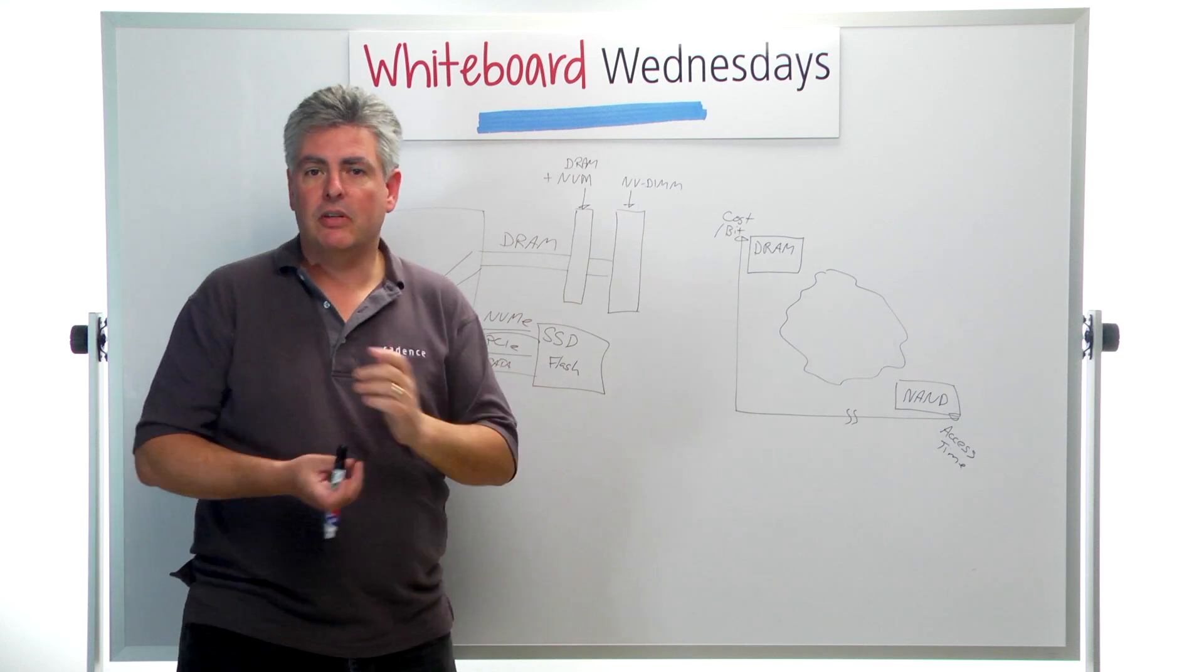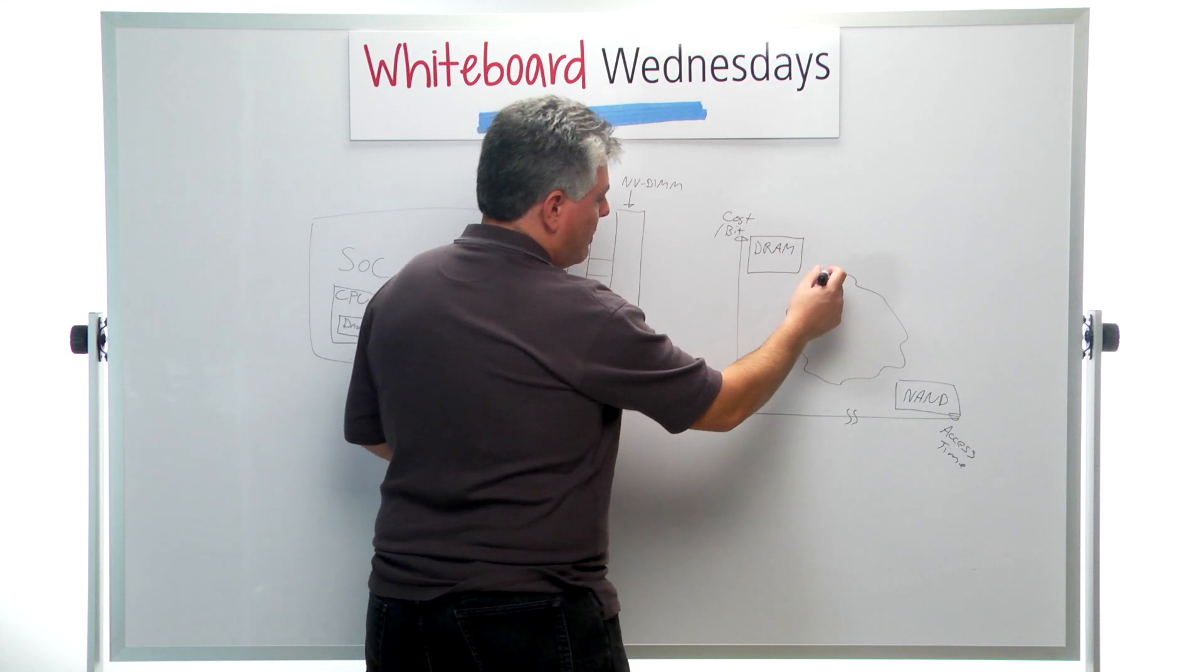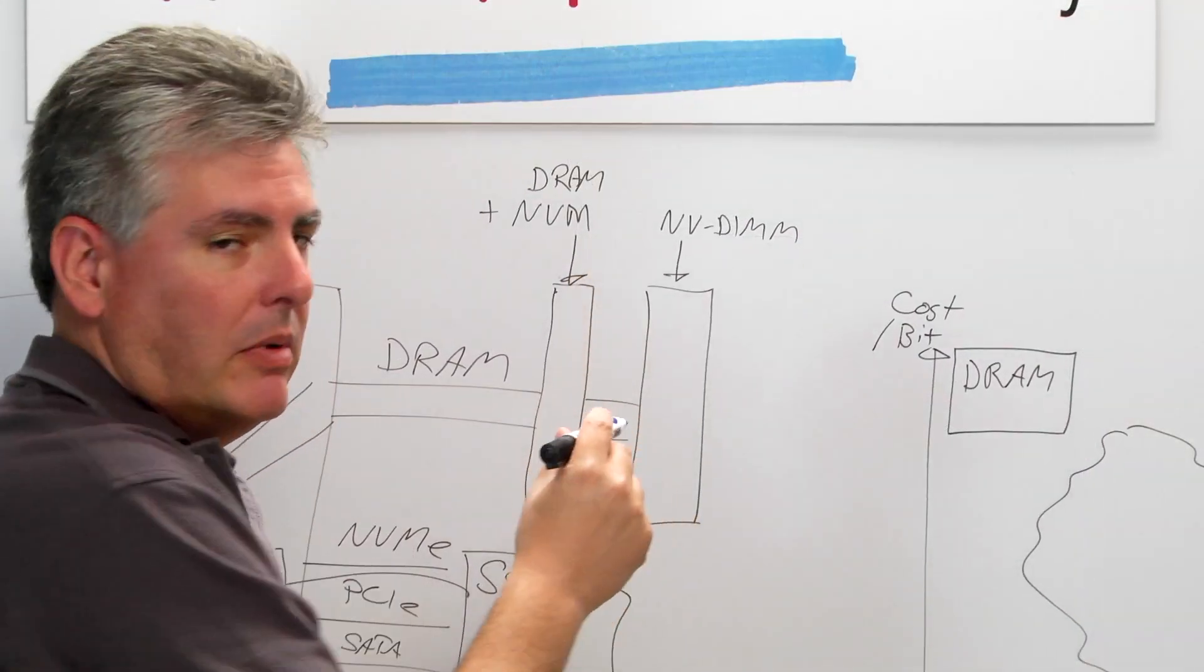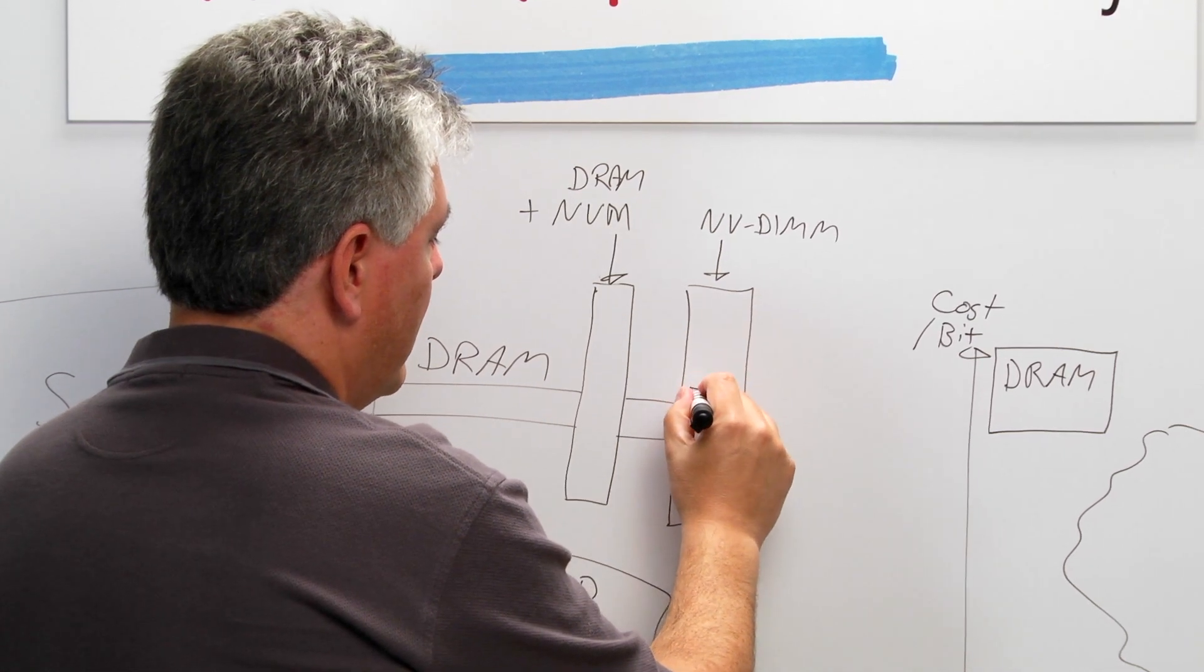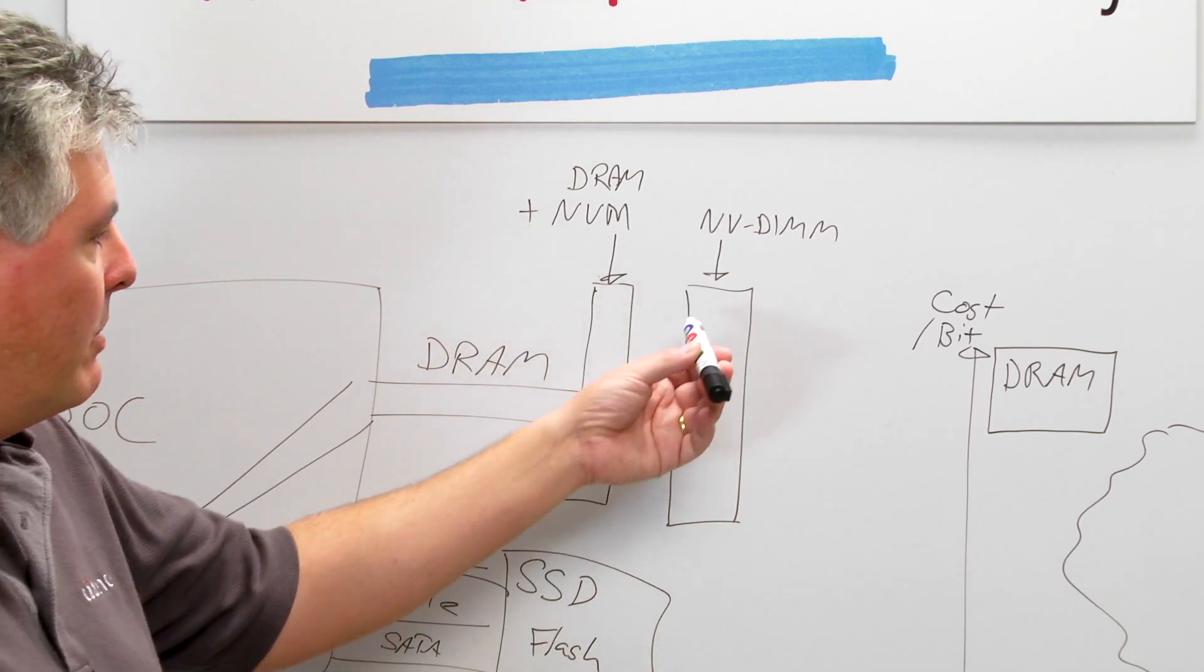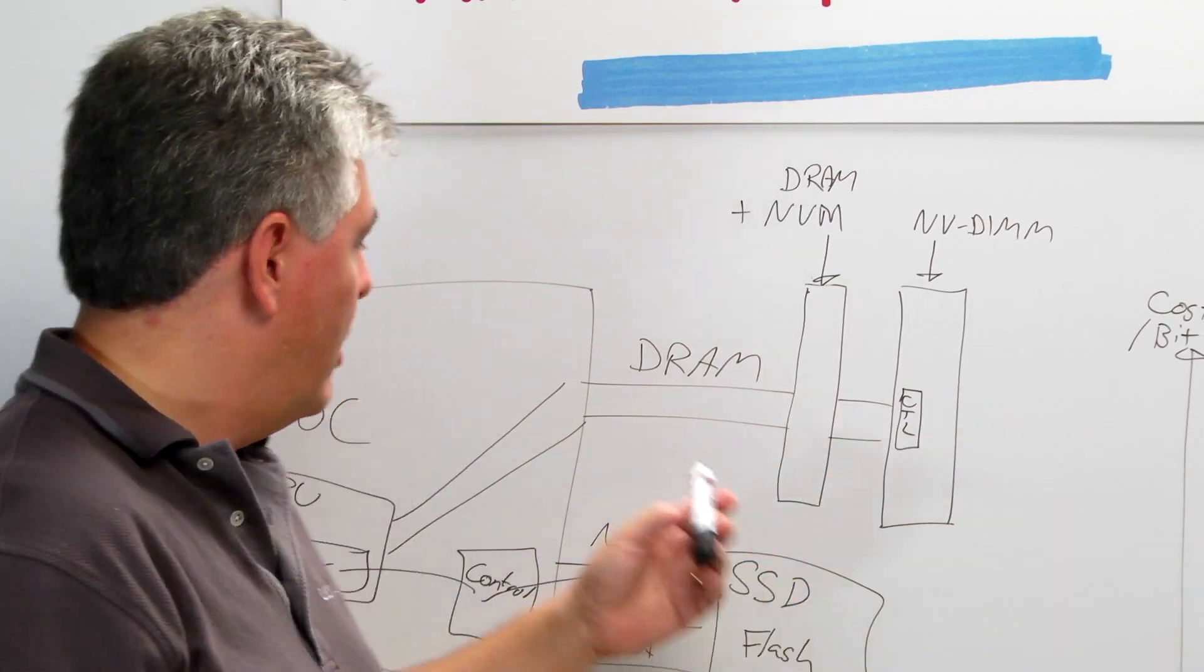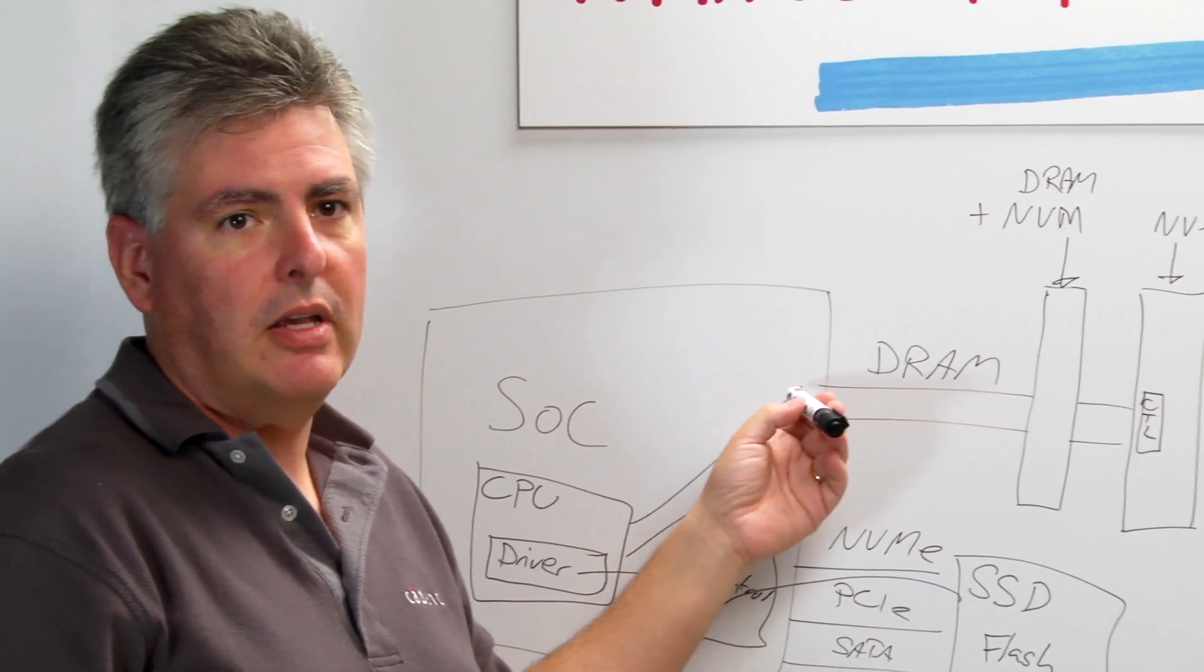Again, this is where the NVDIMM starts to become useful to us. I can put my storage class memory, my new novel NVM memory type, I can put that on an NVDIMM DIM. I can put the controller for it also on this DIM. And then I can have really whatever memory type I want to on this NVDIMM device while still respecting the DRAM bus protocol. Which means that I can connect it into any device, any SOC device that supports the NVDIMM protocol.